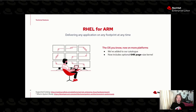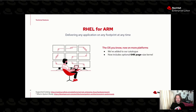Probably the biggest announcement for RHEL 9.2 is we now have 64K page-sized kernels for ARM — try saying that five times fast. You can now choose whether to use a 4K kernel or a 64K kernel. Under certain workloads, this drastically increases the performance and memory footprint — if you have a workload that would benefit from this, you probably know who you are.